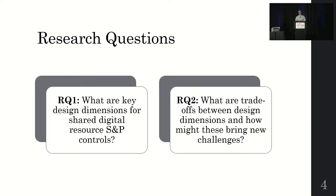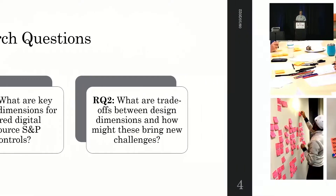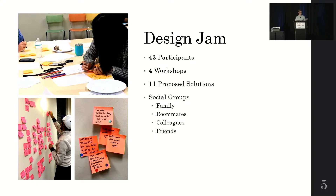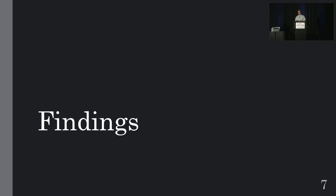We took a human-centered approach in exploring this design space. We investigated what key design dimensions exist for controls on communal digital resources, and then we interrogated what trade-offs may arise for these dimensions. To answer our research questions, we held participatory design jams — a form of workshop wherein participants collectively brainstorm a tool to address a specific problem. The jams produced both a record of the proposals and a discussion or critique among the wider group.